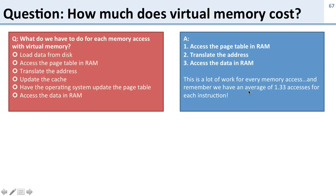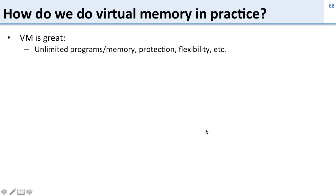This is a lot of work. We have an average of 1.33 memory accesses for each instruction. Now we're going to have to do two memory accesses for each of those, plus all the translation work. So this is going to be very, very expensive. We've got to figure out how to make it faster.